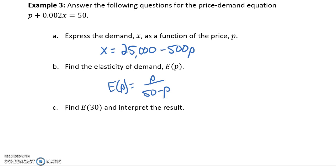Then what we want to do is actually interpret that result for e of 30. So, we could evaluate that function when p equals 30, which would give us a result of 3 halves. In this case, that value is greater than 1, meaning that demand is elastic.